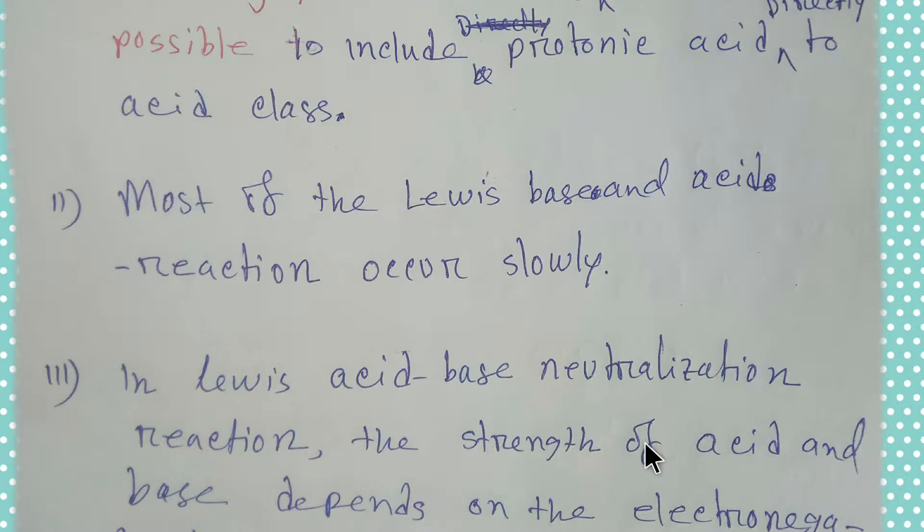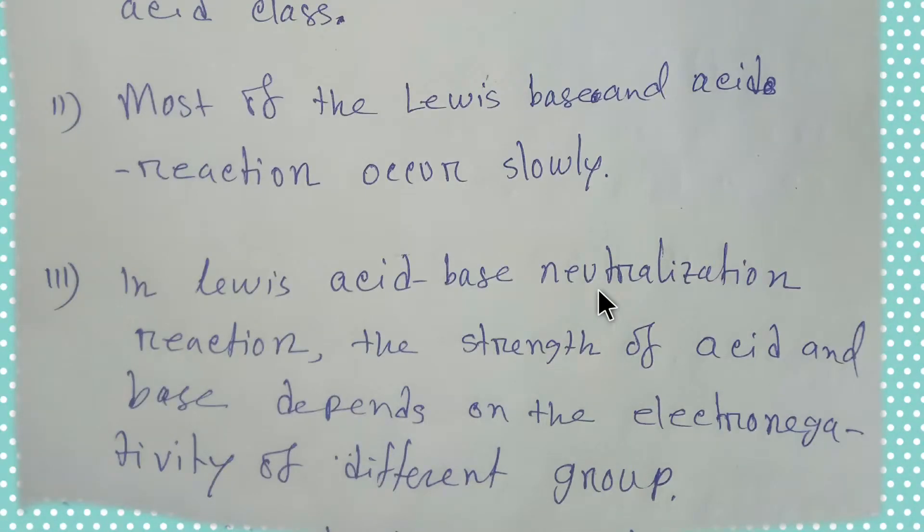Number three is: in Lewis acid-base neutralization reactions, the strength of acid and base depends on the electronegativity of different groups. Can you tell me what is electronegativity? Electronegativity means the power to attract electrons. That is a type of tendency to attract electrons.